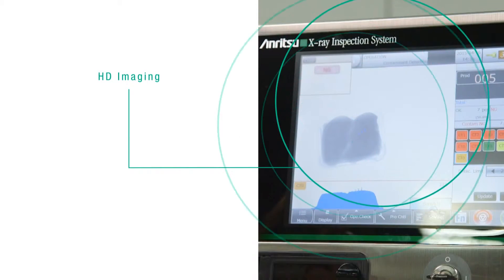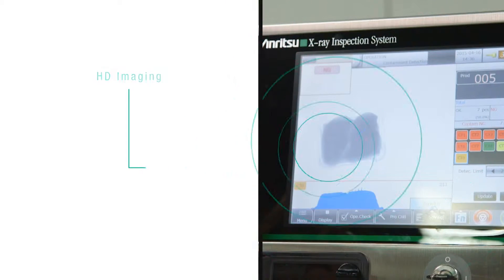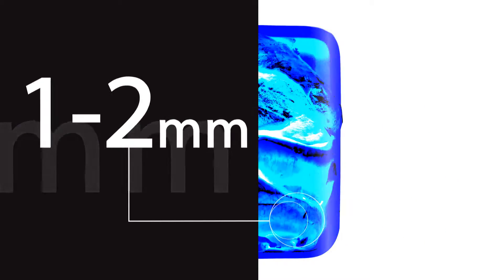All our x-ray systems come equipped with Anritsu's HD imaging that can detect metal contaminants as small as 0.4 millimeter diameter wire and 1 to 2 millimeter diameter glass and stones.